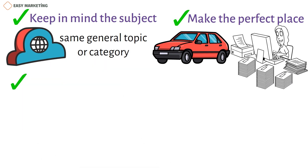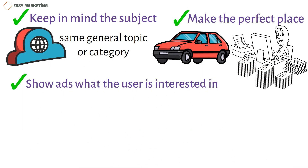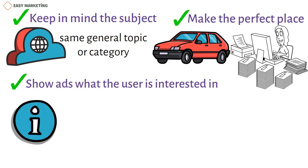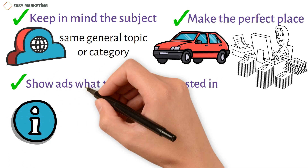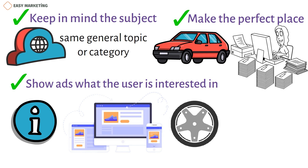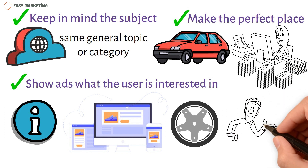Show ads that are relevant to what the user is interested in. Using information about how people use Google, you can run display ads that are related to what people are interested in. For example, a person who likes cars might look into tires, car stereos, etc. With interest-based display ad targeting, your ad will show up on all pages that are relevant.